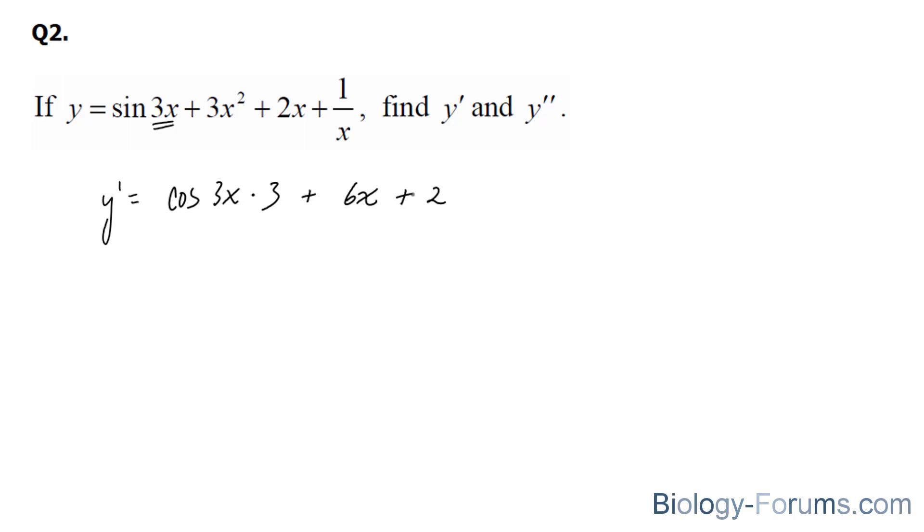And here, you might find this one a little bit odd. Do not be tempted to use the quotient rule. Simply take this x and make it x to the power of negative 1. Because x to the power of negative 1 is the same thing as 1 over x. And we can use the power rule simply for this. So we bring this 1 down, and it becomes negative 1x to the power of negative 2. So that's the first derivative.